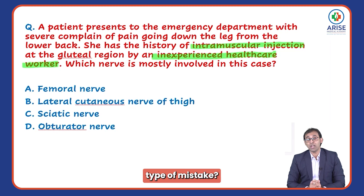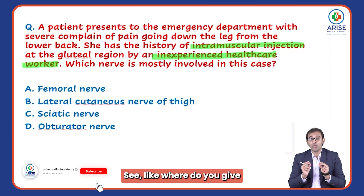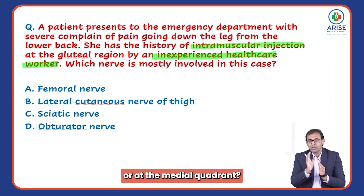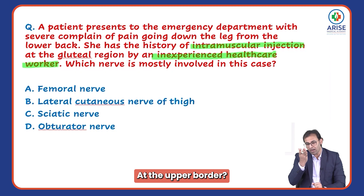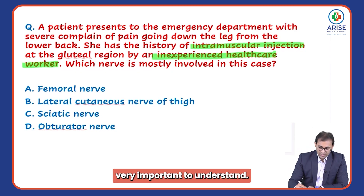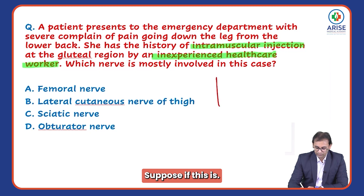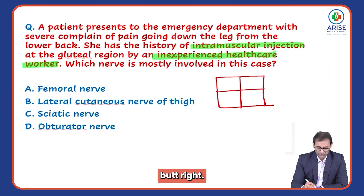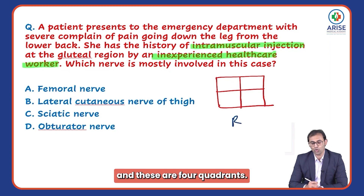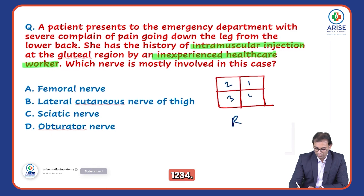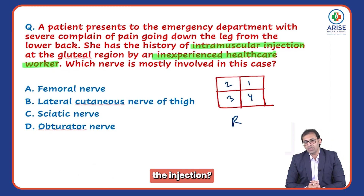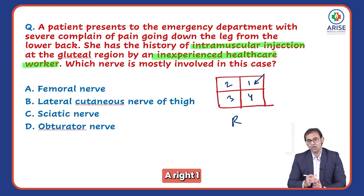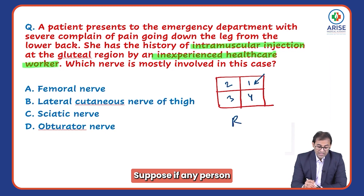After injection over the gluteal region, what is the most common nerve to be injured, and what are the most common types of mistakes? Where do you give the injection — at the outer quadrant of the buttock or the medial quadrant, at the upper border or the lower border? Suppose this is the right buttock with four quadrants: one, two, three, four. Where will you give the intramuscular injection?